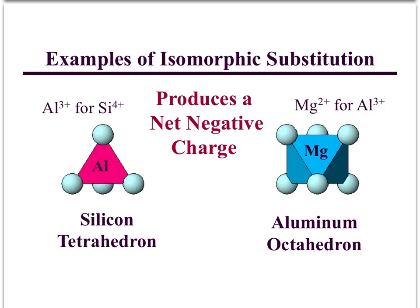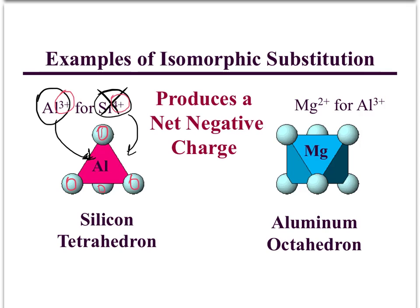So clays are sometimes reformed minerals from those broken-down constituent parts. When these layers and sheets of clay are made, you can actually have substitution. Normally we have silicon in this tetrahedron, but now we see that aluminum is inside that tetrahedron instead of silicon. So aluminum substitutes every so often for silicon. Aluminum is only 3+ while silicon was 4+.